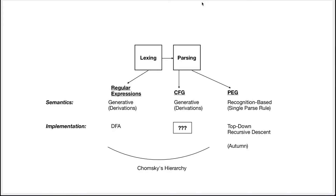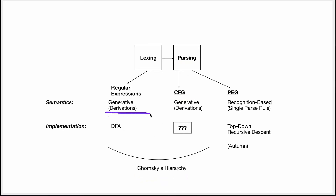For lexing, we've given the example of regular expressions, which we can use to implement lexing. Regular expressions are similar to context-free grammars, which are typically used for parsing, in that they're both part of the Chomsky hierarchy, and they use the same kind of semantics based on derivations. We've seen how to implement regular languages using a deterministic finite automaton.